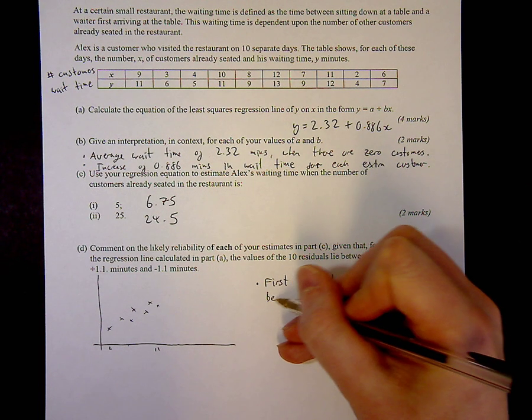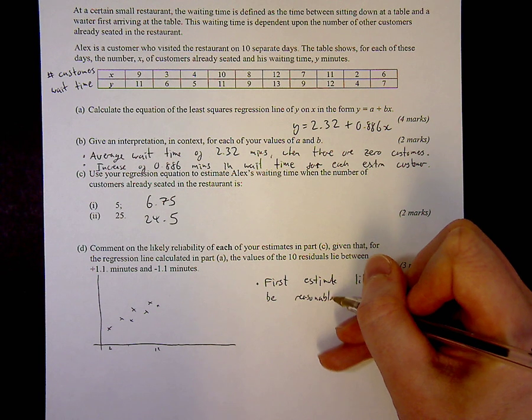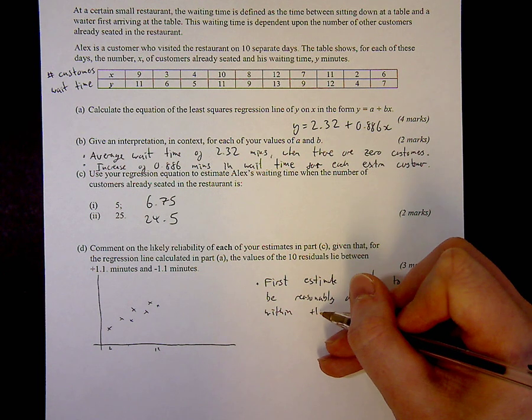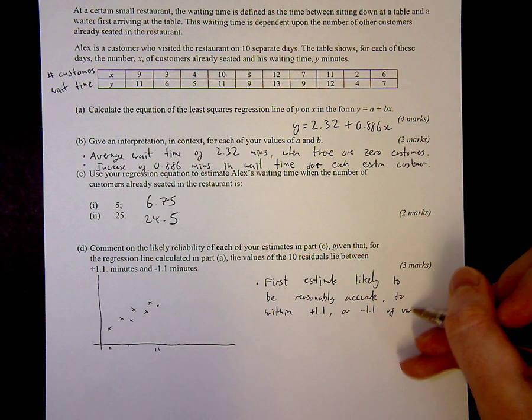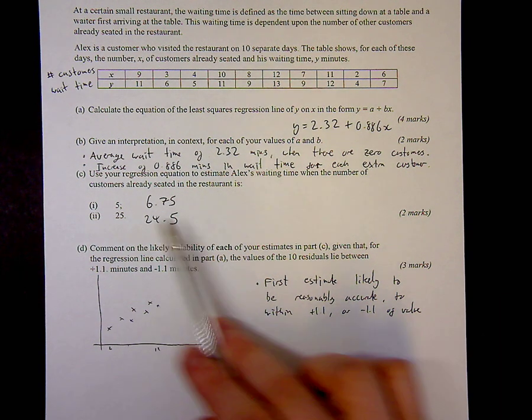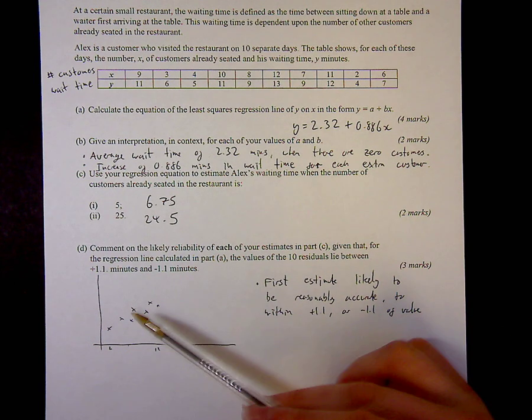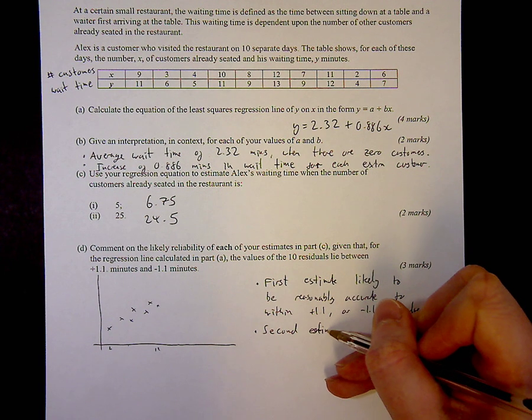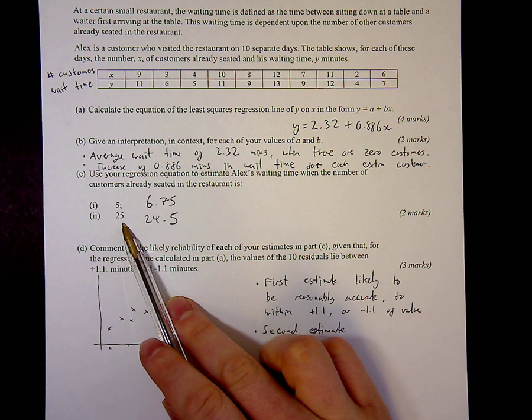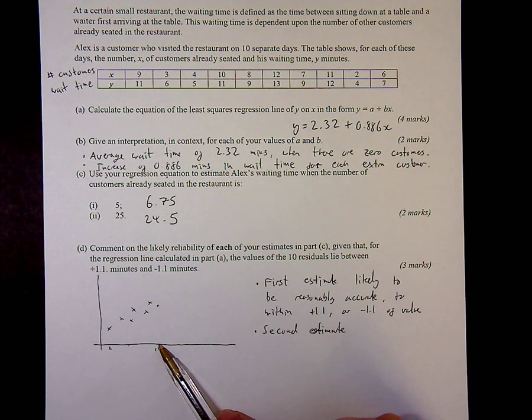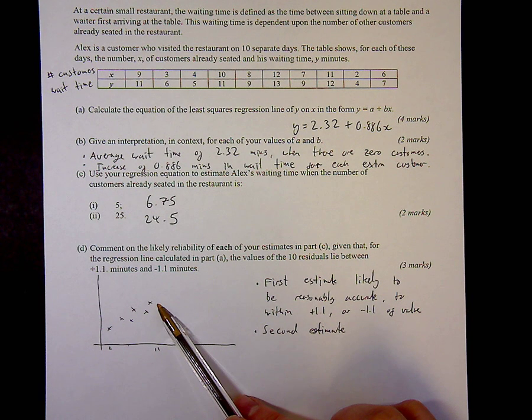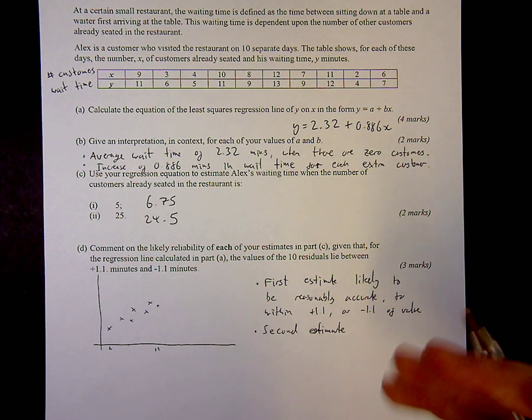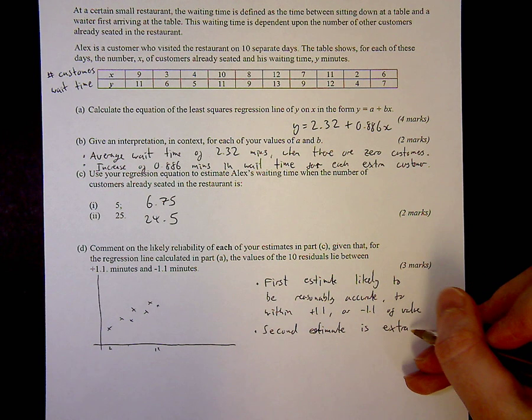Well, the highest value I've seen so far is 12. Although this seems to be a fairly linear relationship thus far, it might not continue in that fashion. It might increase exponentially, it might level off. There's no way really of me knowing. So this is extrapolation. So the second estimate is extrapolated, so it's likely to be unreliable.